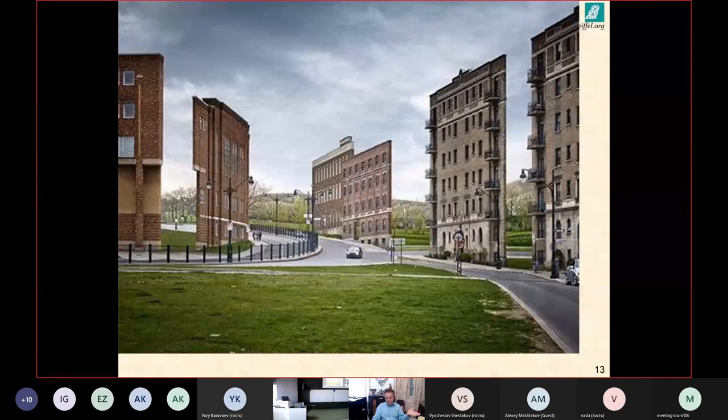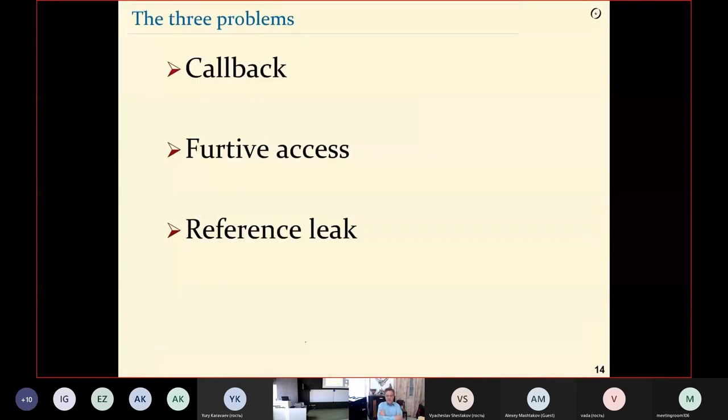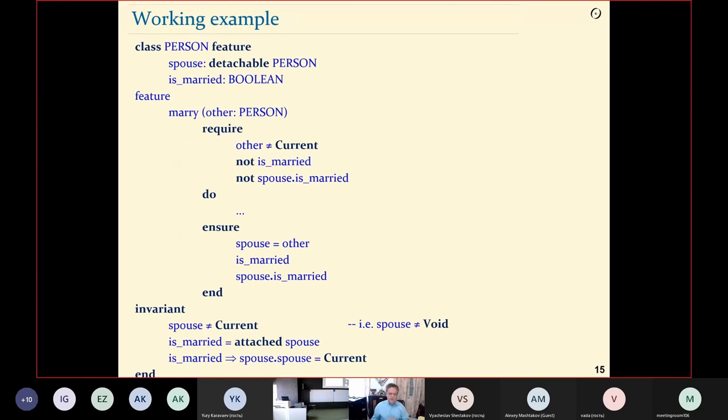It would mean that everything is simple and coherent. Basically, we have the application to object-oriented programming of the notion of recursive proof in mathematics. We check that the initial states satisfy the invariant, and then we prove that in any state that satisfies the invariant, if we apply any operation, it will satisfy the invariant afterwards. This would be very nice were it not for some nasty problems that arise. We have three problems: callback, fructive access, and reference leak.